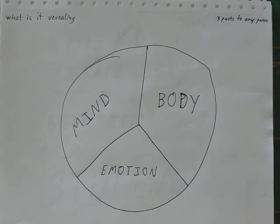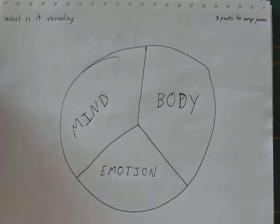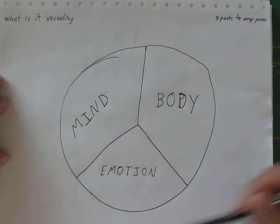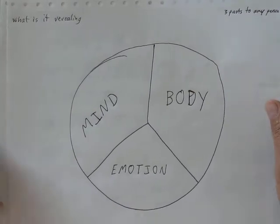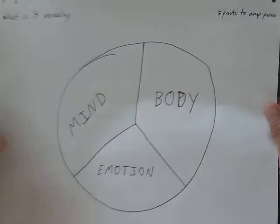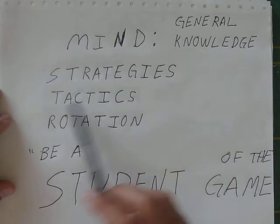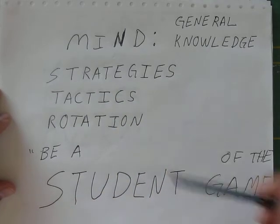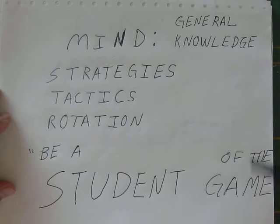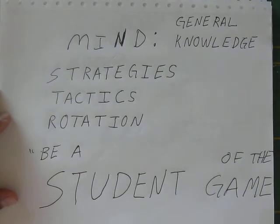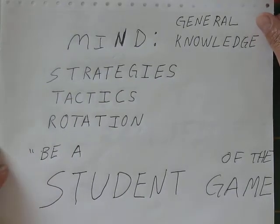It reveals three parts. There are only three parts of any person, and that is their mind, the body, and their emotion. Let's define what those parts mean as they pertain to badminton. The mind is general knowledge of strategy, tactics, rotation, and continuing learning — or as my coach put it to me, always be a student of the game. That means when you watch the game, always be watching and analyzing it, not just for entertainment.